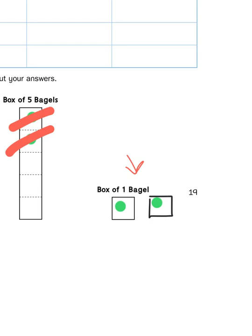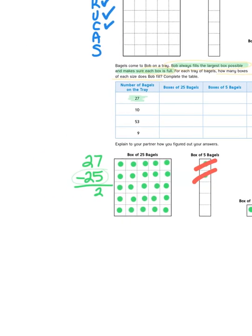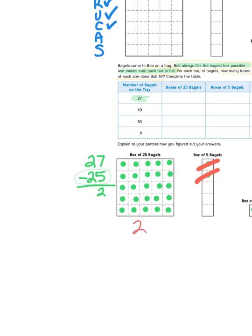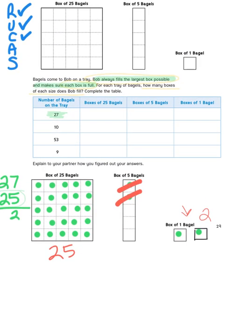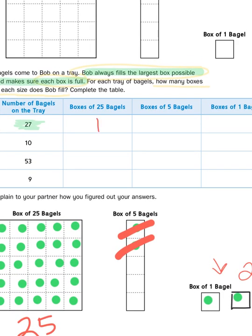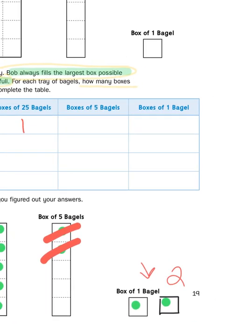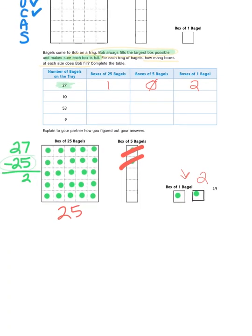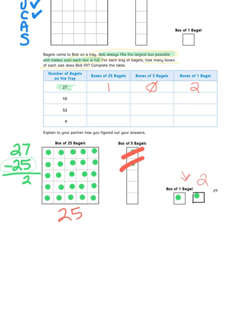So what I need to do is I need to make 2 boxes of 1. All right? So here's my 2 bagels right here. And here are my 25 bagels here in this box. So when I look at this table and I think to myself, how many boxes will Bob need to put away 27 bagels? He's going to need 1 box of 25. He's going to need no boxes of 5. And he's going to need 2 boxes of 1. As you can see here. 25 and 2 boxes of 1.